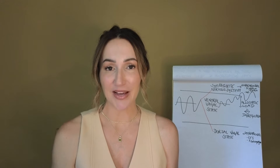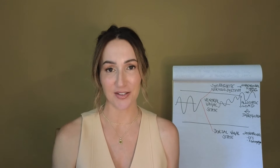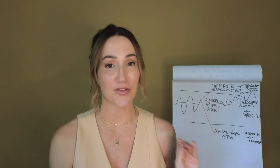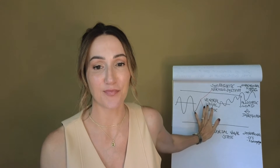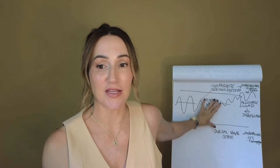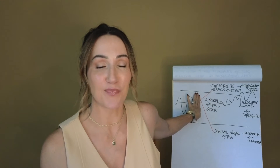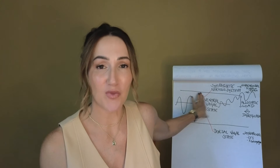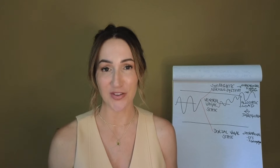Today's video is all about nervous system dysregulation, and we can start by looking at the three different states which I've mapped out here. If we look at this first state, where we're inside this window, we can call this our ventral vagal state, or we might say we're inside our window of tolerance.